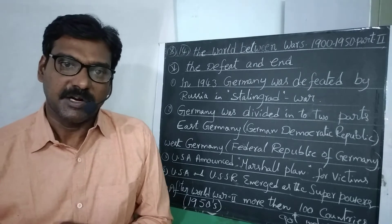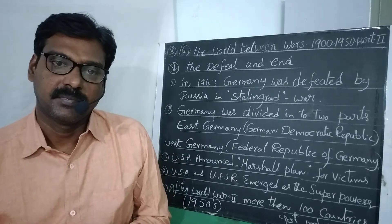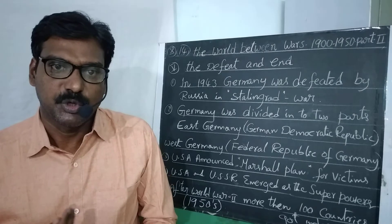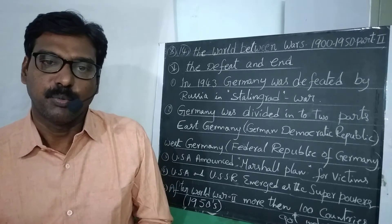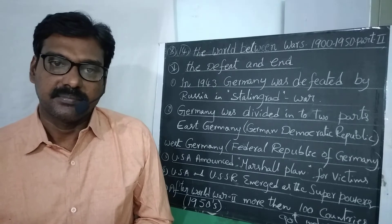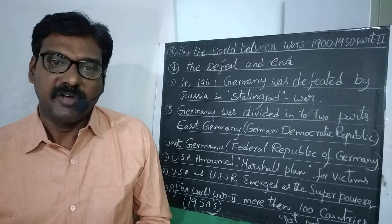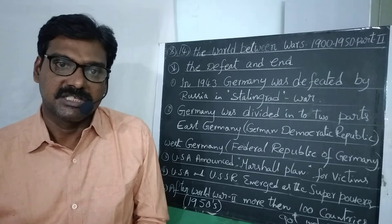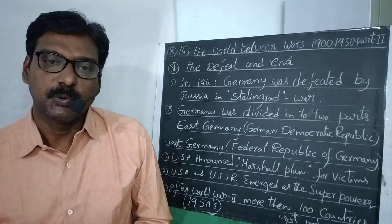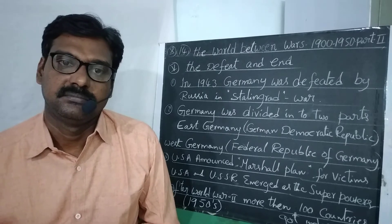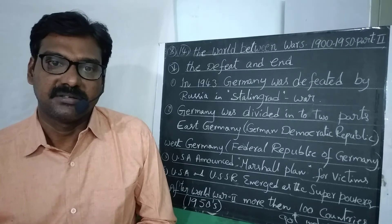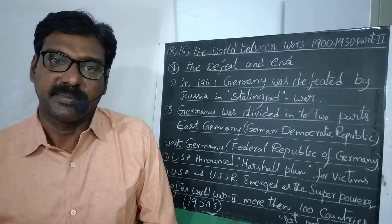After the Second World War, many Nazi generals and officers were captured, arrested, and put on trial. Eleven Nazi generals were given the death punishment, and many Nazi generals were punished with life imprisonment.